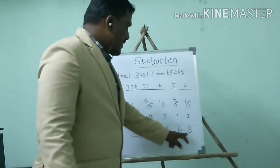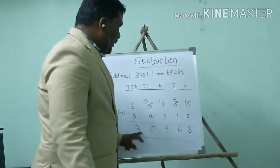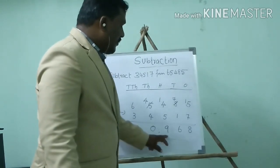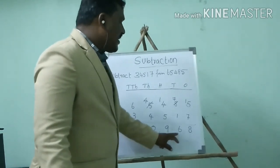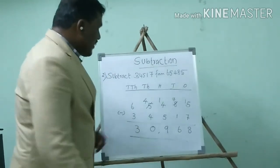Now how do we read the answer? 1, 10, 100, 1000, 10,000 — so 30,968 is the difference.